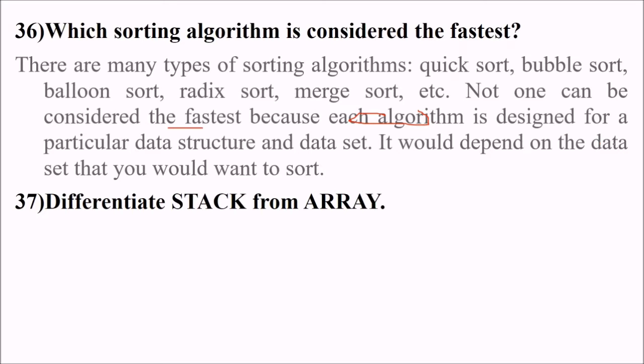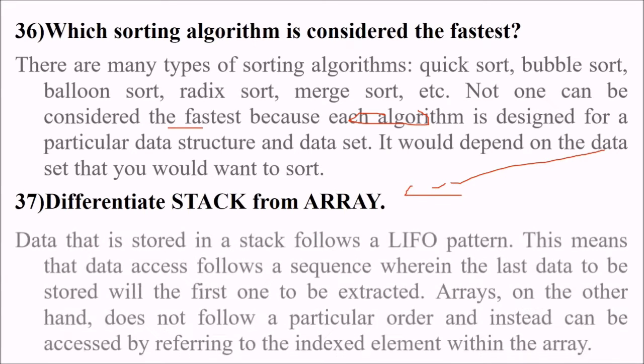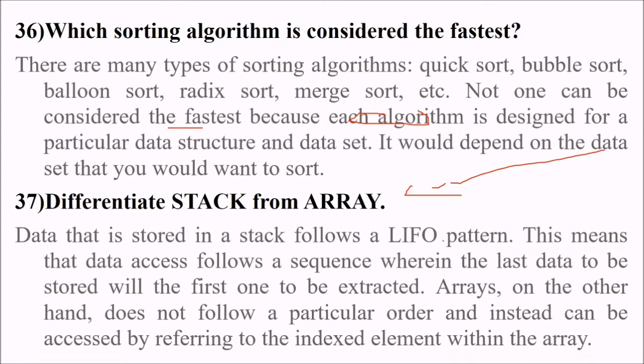Stack and array - how can you differentiate between these two? Data that is stored in stack follows the last in, first out pattern. That means the data access follows a sequence where the last data to be stored, you can extract this data only. While in arrays, on the other hand, it does not follow this kind of pattern. You can access just by referring to the indexed element within the array.